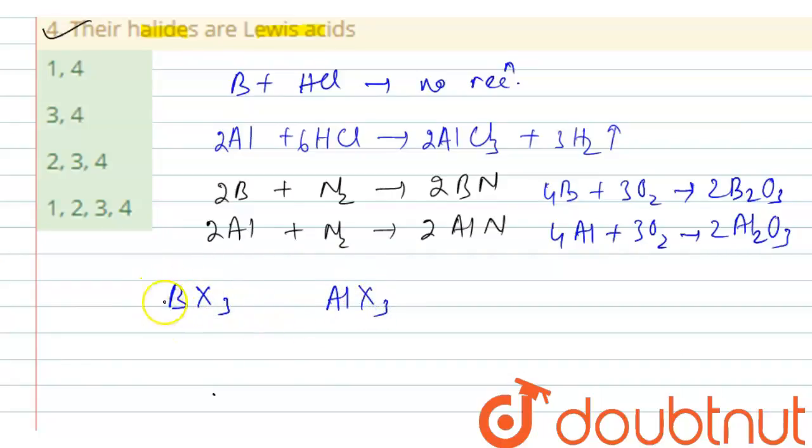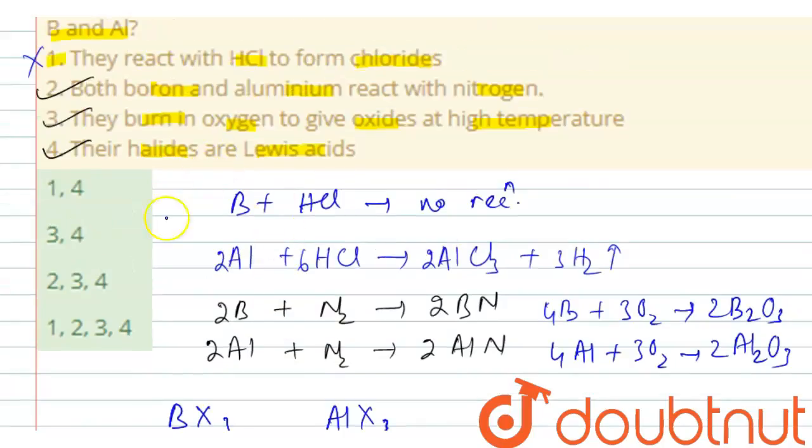Boron has 3 electrons and aluminium also has 3 electrons in its outermost shell, then 3 from the halogen. Therefore, total they are getting 6 electrons. So they are still short of 2 electrons. That is the reason they are Lewis acids or electron acceptors.